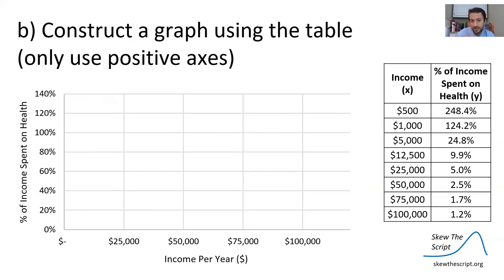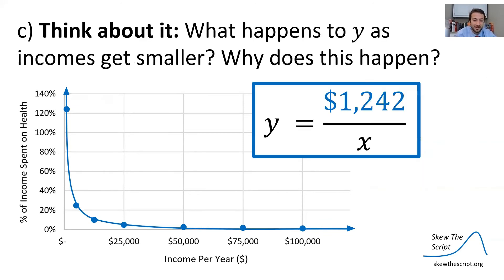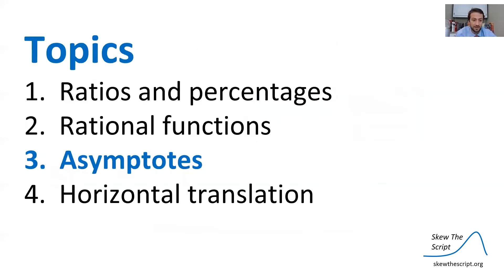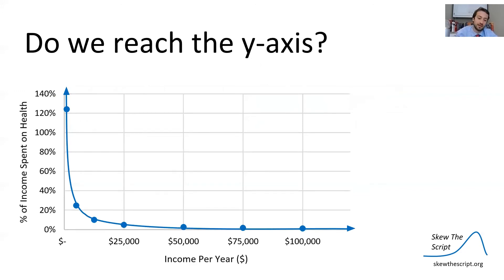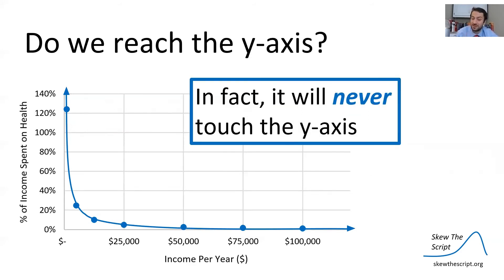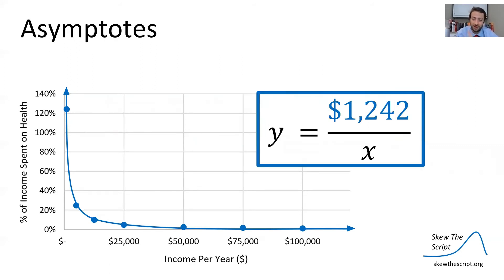We construct a graph using only positive axes — income per year on the x-axis, percent of income spent on health on the y-axis. We plot the dots and draw our line, which takes a very distinctive shape. What happens to y as income gets smaller? As x gets smaller, we're very close to the y-axis — our point at x = $500 is zoomed in, super close but not touching the y-axis. In fact, it will never touch the y-axis. This is where our discussion of asymptotes begins.